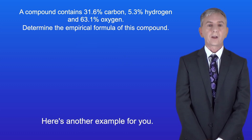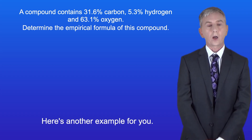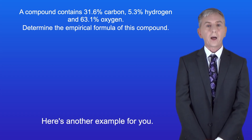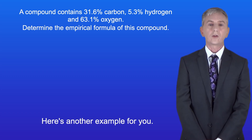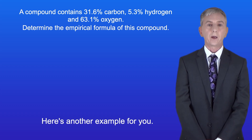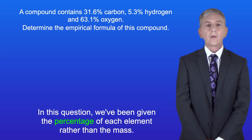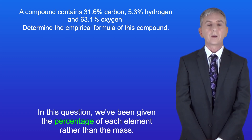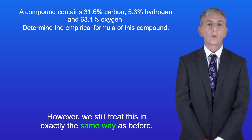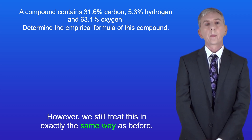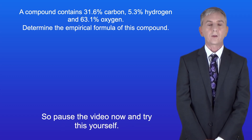Here's another example for you. A compound contains 31.6% carbon, 5.3% hydrogen, and 63.1% oxygen — determine the empirical formula of this compound. In this question we've been given the percentage of each element rather than the mass. However we still treat this in exactly the same way as before. Pause the video now and try this yourself.